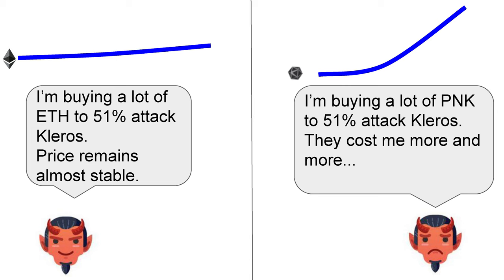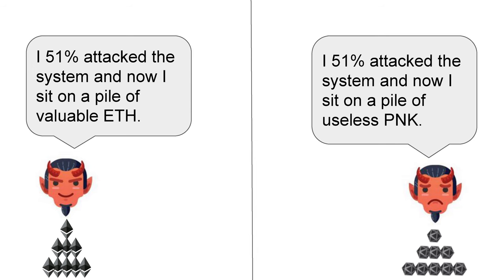If the attack were ETH-denominated and successful, the attacker's cost is nearly zero because Kleros failing probably won't crash ETH's price. But with PNK, you crash your PNK price and end up with useless tokens. In terms of recovery: with ETH and a dishonest court, you're stuck. But with a specific token, an honest minority can fork the token, remove the attacker's stake, and create a new honest version of Kleros.